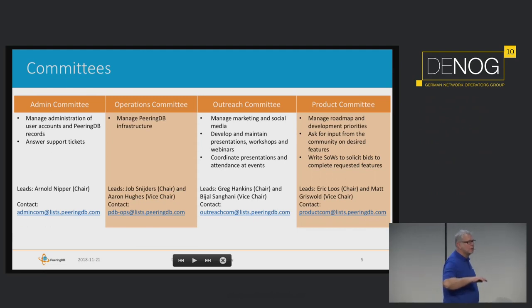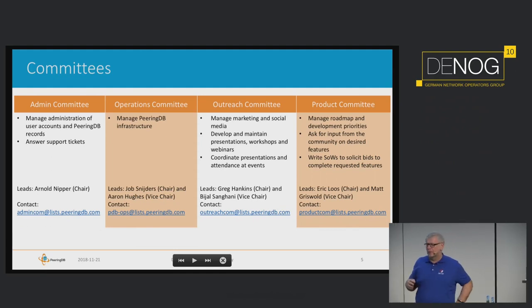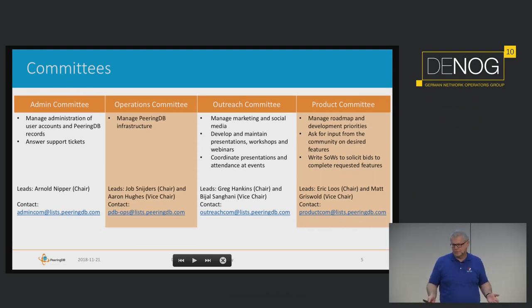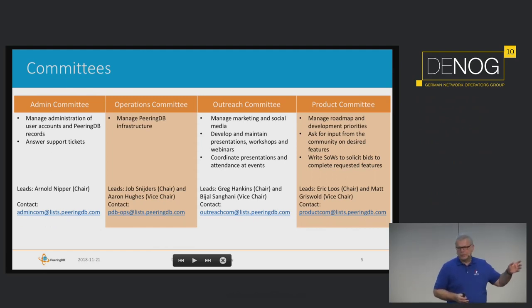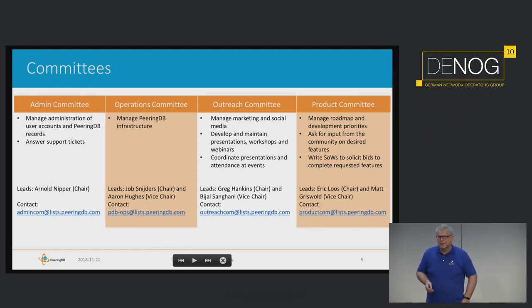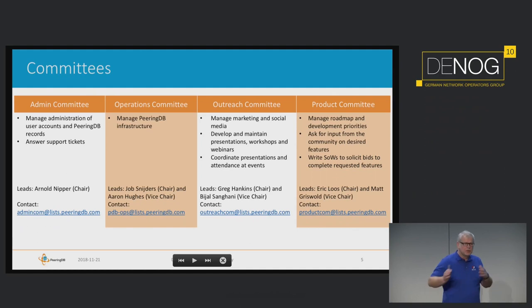Last but not least, we have the product committee, which is essentially what a typical company would call product development. The product committee takes input from users — we use GitHub to collect bug reports as well as feature requests. We then discuss with users what they meant by their feature requests, and for larger ones we request a quote for implementation, go to the board for approval, and then implement.